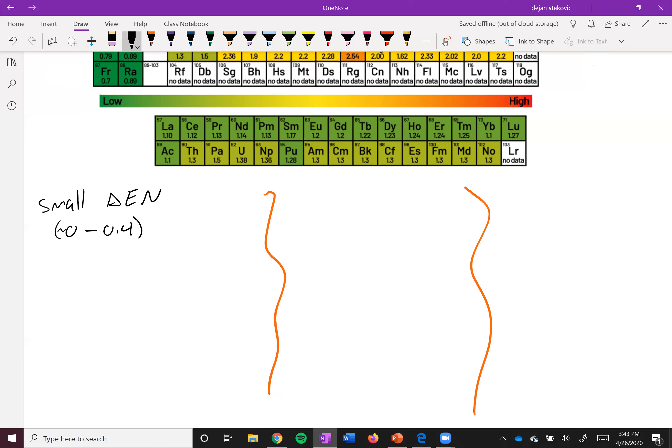We can have kind of a medium difference in electronegativity. This is approximately 0.4 to 2. Or we can have a large difference in electronegativity. And so this would be kind of like greater than 2.